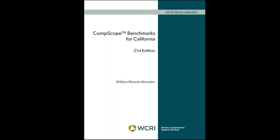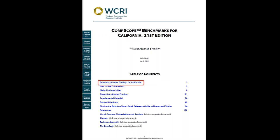Let me show you how you can use this report. There are 15 individual state reports. We'll use California as our example. First, open the report and go to the table of contents on page 1.